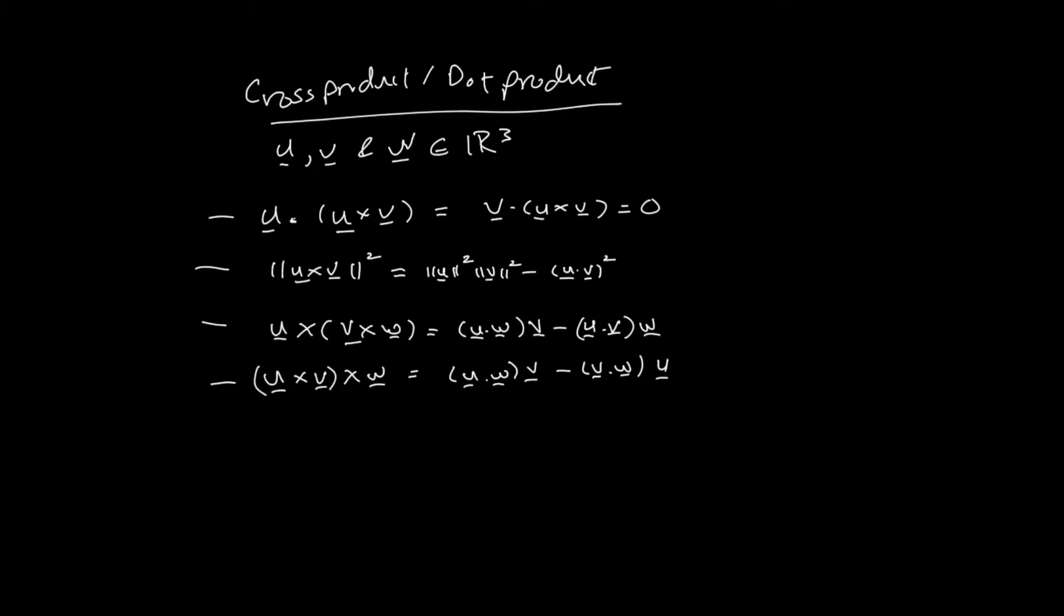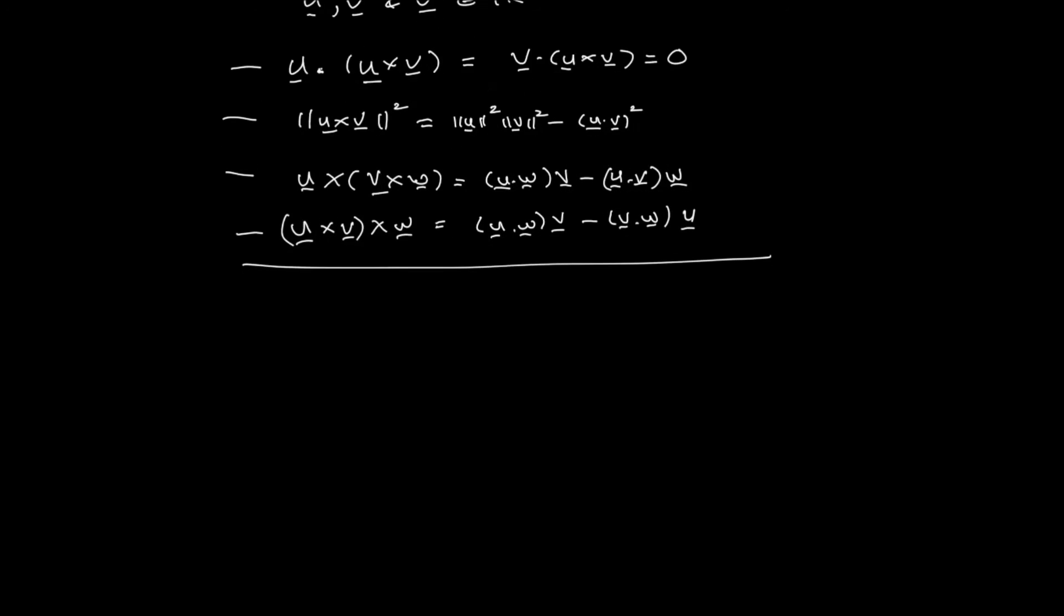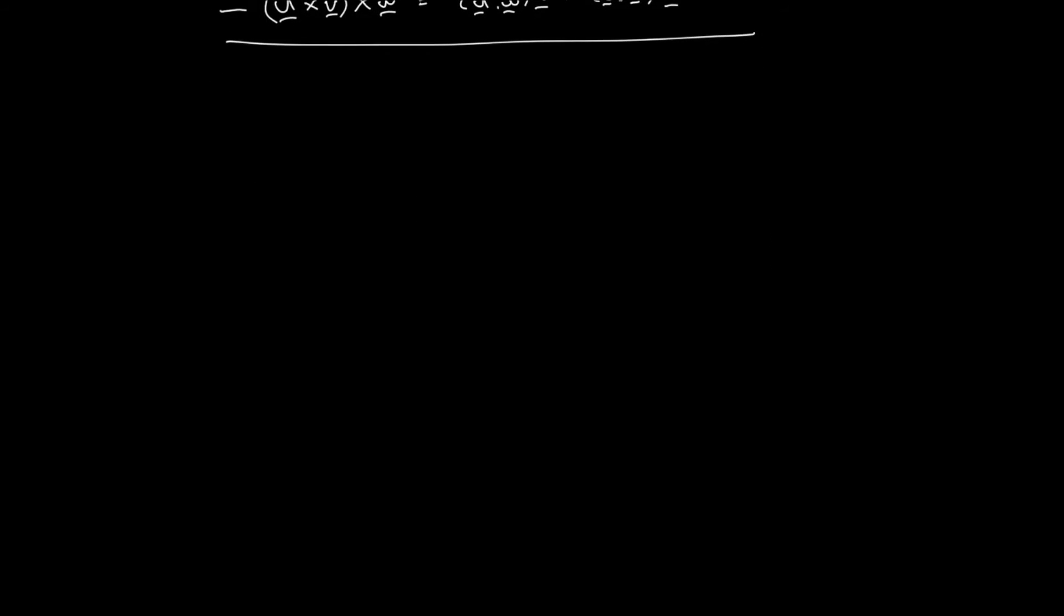Now, if I specifically go to the cross product itself alone, let's look at properties of the cross product, where U, V, and W belong to R3, and K is a scalar. The first property is that the order of taking the cross product, if we reverse, then U cross V is the same as the negative of V cross U.